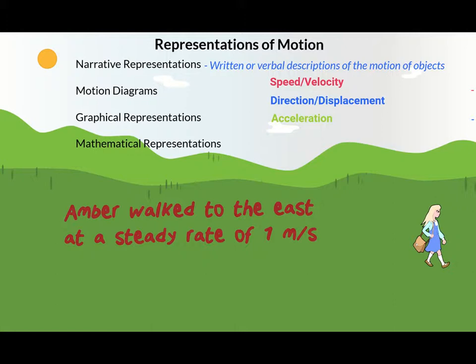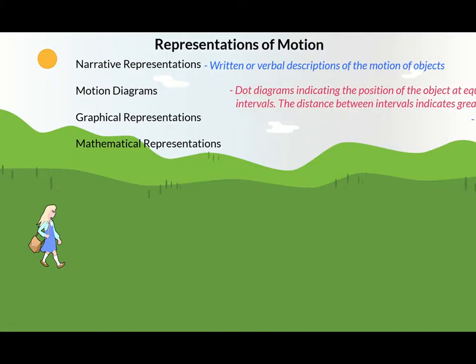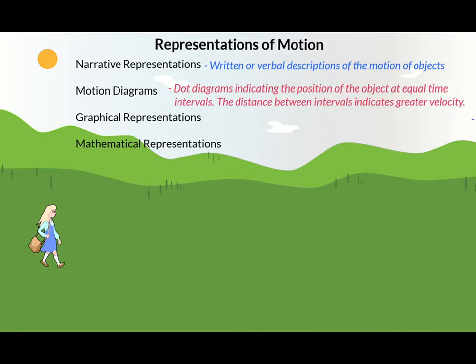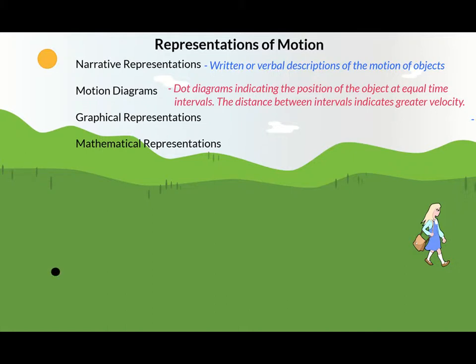Another way to represent motion is through a motion diagram. These are dot diagrams that indicate the position of an object at equal time intervals — the distance between intervals indicates greater velocity. For example, imagine we represent Amber as a single point. When Amber takes her walk across the park, we place a dot at equal time intervals, say one dot every 30 seconds. By then connecting those dots with an arrow pointing in the direction of her motion, we get a visual depiction of her velocity, acceleration, and the amount of time it took.